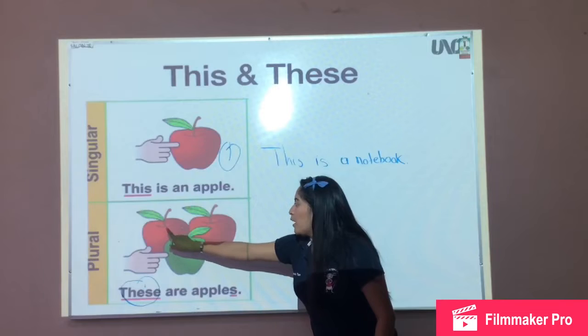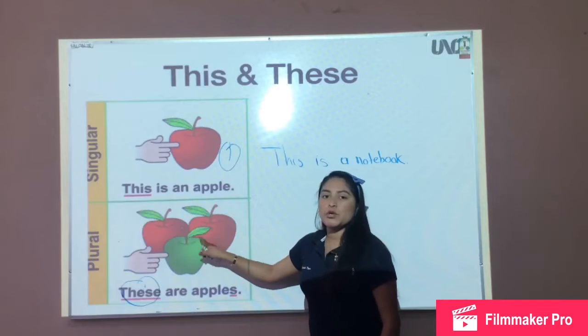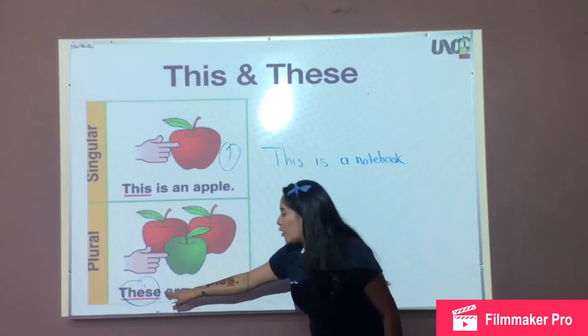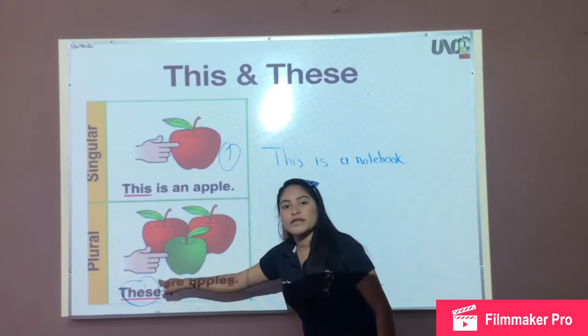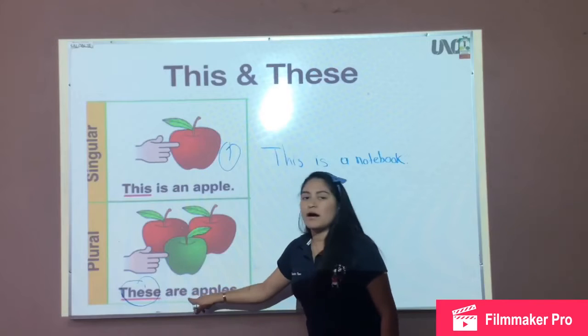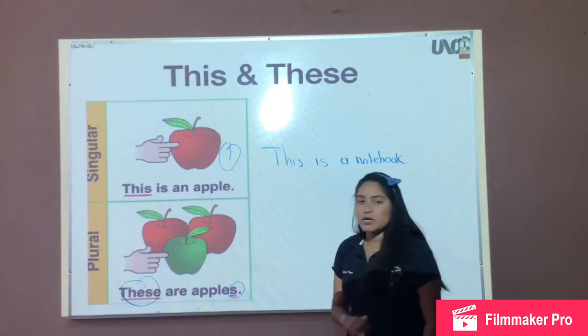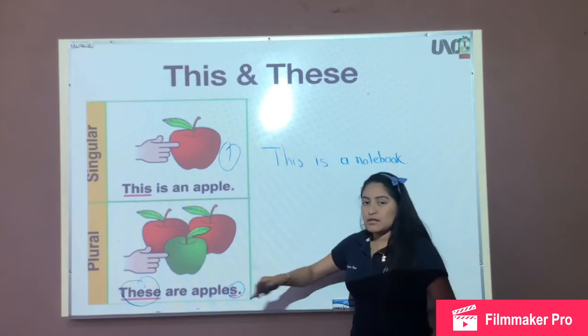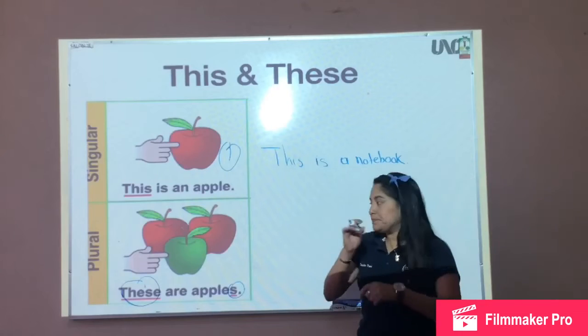We have one, two, and three apples — three. So, we are going to use this: these are apples. Remember, use S because it's plural.